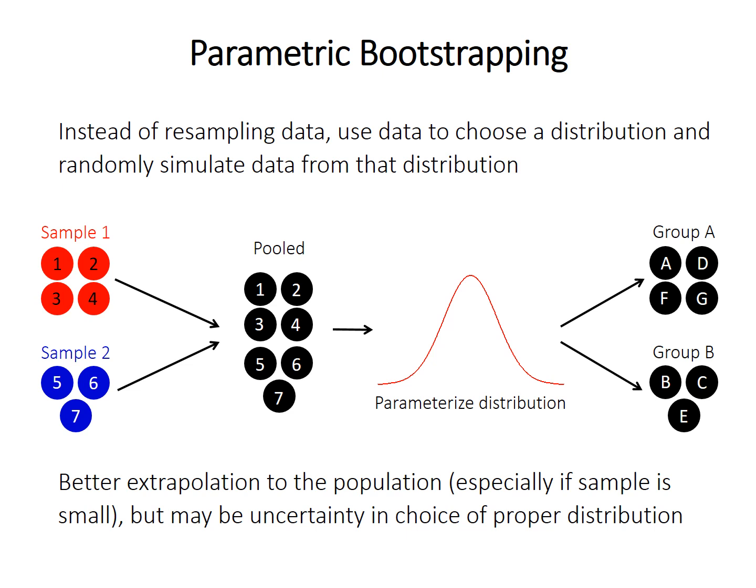So resampling the data is what most people think of as bootstrapping. But it's also possible to use the data itself to choose some distribution, determine the parameters of that distribution, and then randomly simulate data with the structure from the original data. So this is called parametric bootstrapping. And it has the benefit of simulating a broader range of outcomes. So it's more analogous to repeated sampling from the overall population. Even, especially if the sample size is small, we're still constrained by that limited number of observations in our original sample. But if you simulate a distribution, you can get a much broader range.